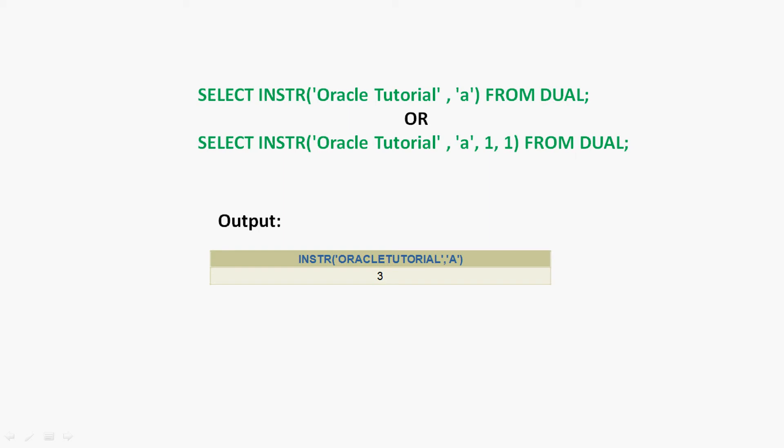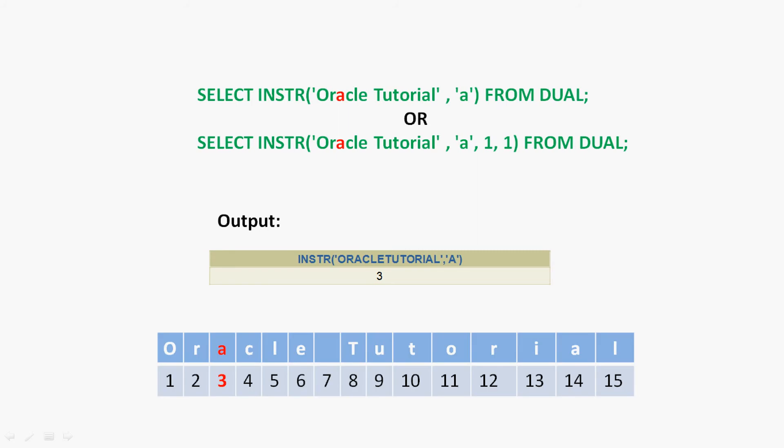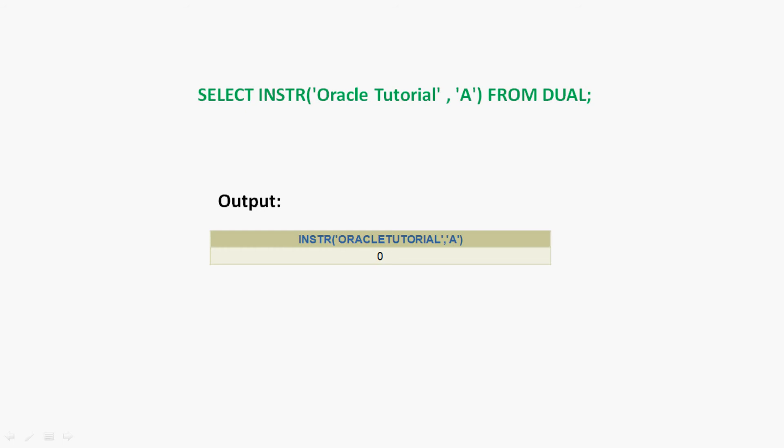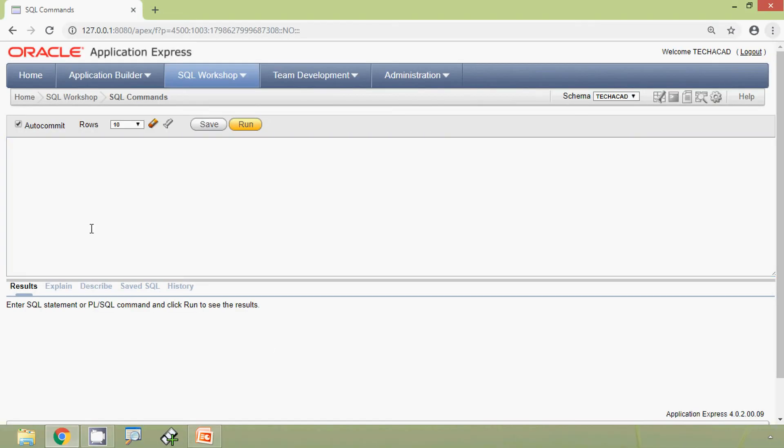The result is three because 'a' appears at the third position in 'oracle tutorial'. Now consider the query SELECT INSTR('oracle tutorial', 'A') FROM DUAL — we cannot find the uppercase 'A' in our string, so the result is zero. Keep in mind: INSTR returns a numeric value, the first position is always one, and if the substring is not found, the function returns zero.